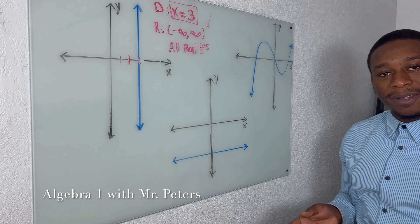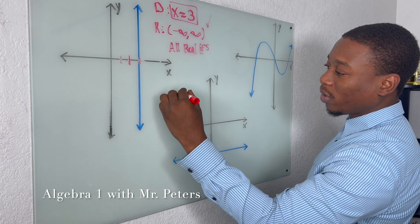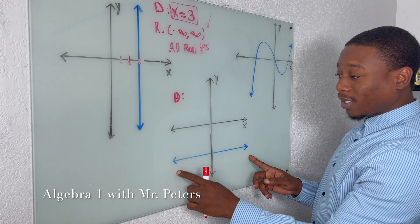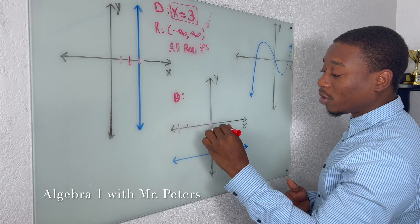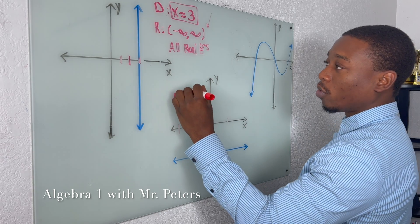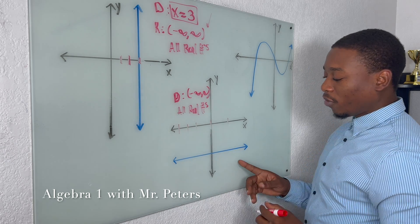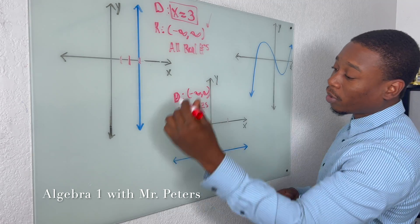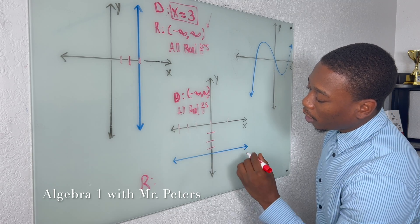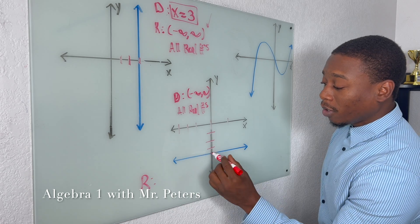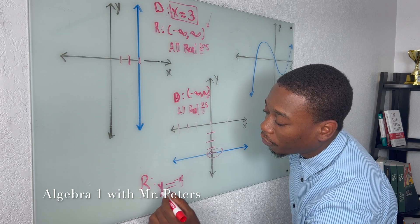Problem number two is the same idea but now we switch variables. We have a horizontal line running parallel to the x-axis, so every x value is included — negative five, negative four, negative three, zero, and so on. The domain is therefore negative infinity to positive infinity, or all real numbers. But the range is similar to the domain in the previous problem: since only y equals negative four is on this graph, the range is simply y equals negative four.